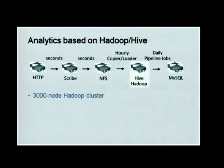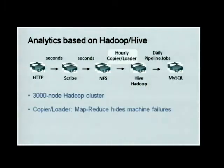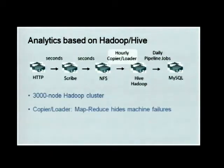We have 3,000 nodes of Hadoop cluster, which pretty well solves the scalability problems already. The copier and loader that we have is based on MapReduce, which basically means if some of the processes fail, they will automatically get restarted, so we don't need to care about machine failures.